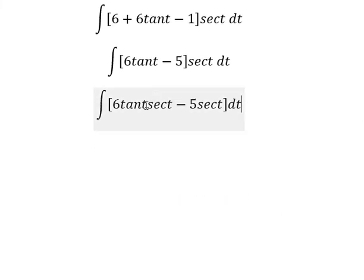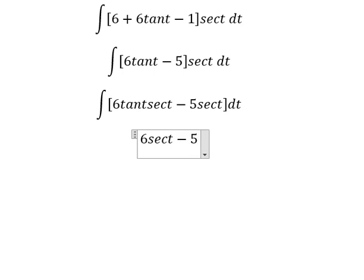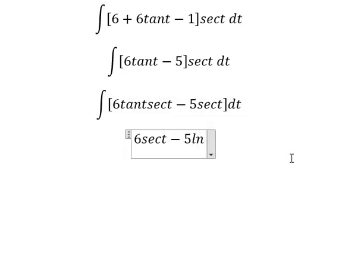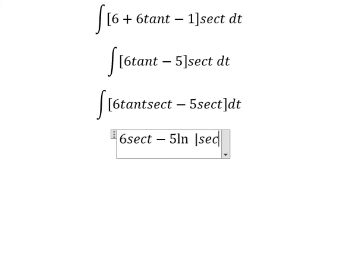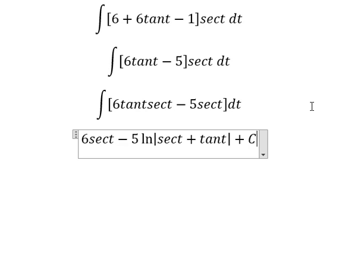The integral of tan(t) sec(t) gives us sec(t). The integral of sec(t) gives us ln of the absolute value of sec(t) plus tan(t), and we add the constant C.